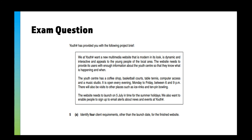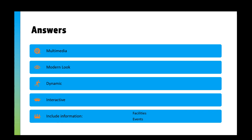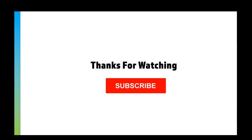The answers are: the website must be multimedia, it needs a modern look, it needs to be dynamic, and it needs to be interactive. The last mark requires including specific information — not just 'include information', but rather 'include information on facilities' or 'include information on events'. Just writing 'include information' or 'writing text' wouldn't get the mark. Client briefs are fairly straightforward and the exam questions on them are quite accessible.